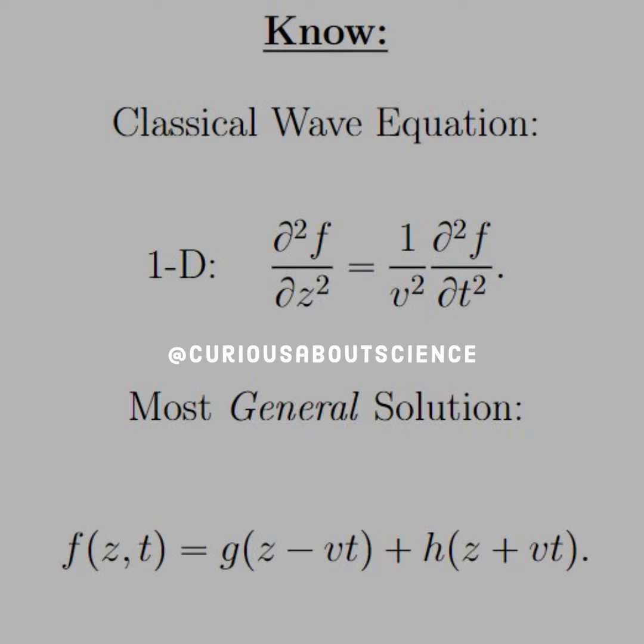So what we know is the classical wave equation - we saw that last time as well. We see that the most general solution to the wave equation has the form f(z±vt), where z is the direction the wave is traveling on, like the z-axis, and ±vt is the propagation direction - so left or right.